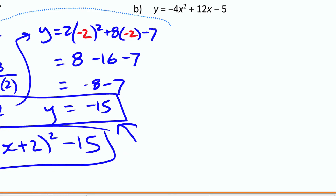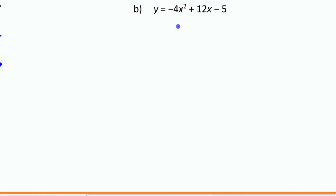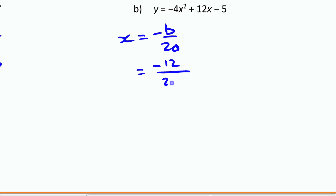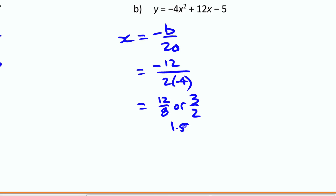Let's try the last example. Using the formula x = −b / 2a, we have −(−12) / (2 × −4) = 12 / −8 = −12/−8 = 12/8 = 3/2, which is 1.5. Whether you prefer fractions or decimals, that is the x-coordinate of the vertex. For the y-coordinate, substitute x = 1.5 back into the original function.